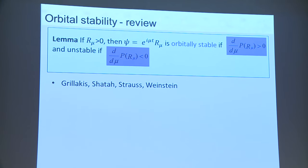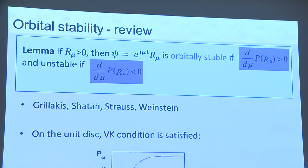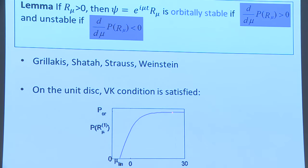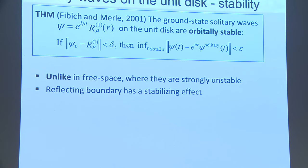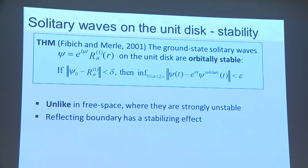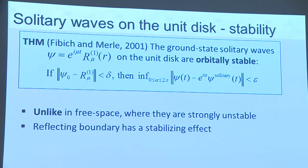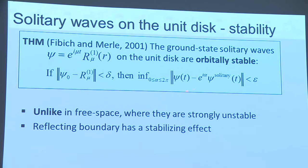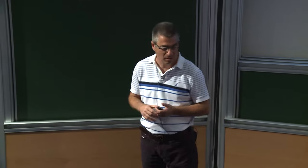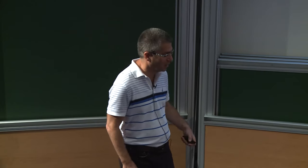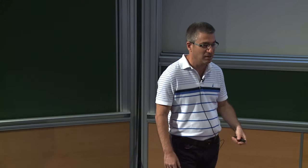On the unit disk, we see numerically that the VK condition is satisfied — the power is increasing as a function of mu. This leads to the theorem that the ground-state solitary waves on the unit disk are orbitally stable, meaning stable up to phase changes. This is very different from free space, where these solitary waves are unstable in the 2D cubic case. The Dirichlet boundary condition has a stabilizing effect on solitary waves.